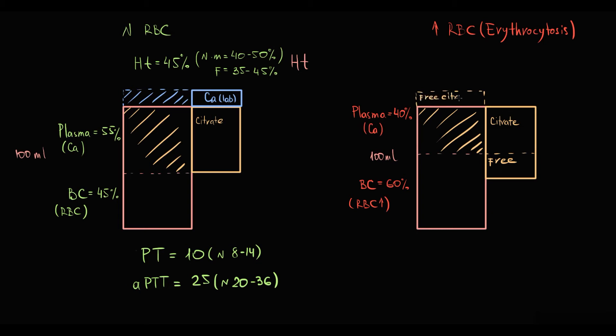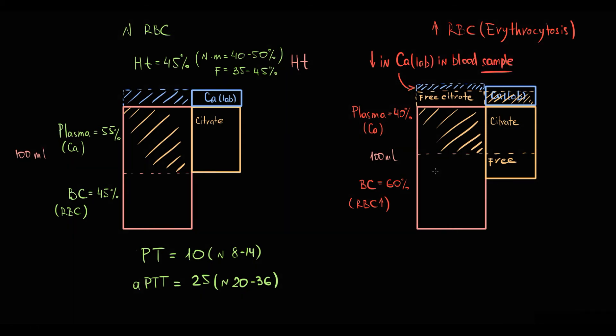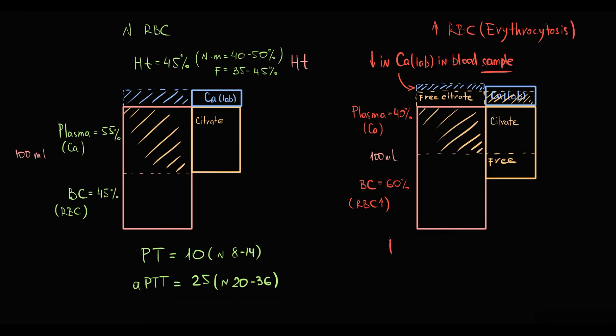When in the laboratory we add calcium, this excessive citrate will bind our calcium, and this will cause decreased amount of calcium in the blood sample. Without calcium, initiation of coagulation is slowed, and this results in abnormally prolonged prothrombin time and activated partial thromboplastin time.